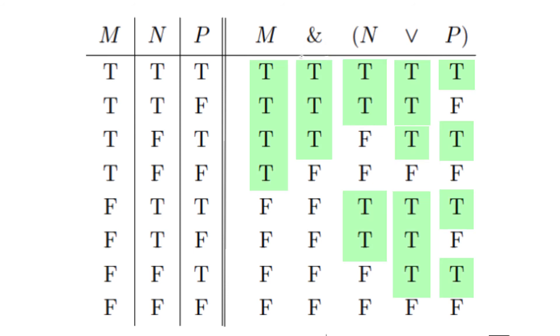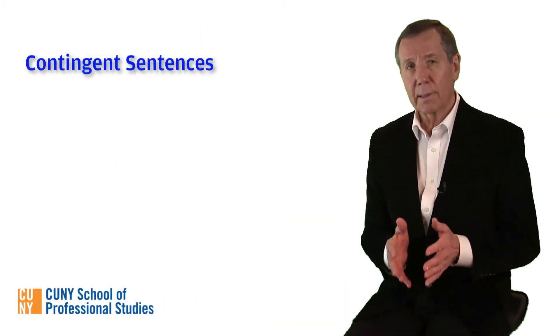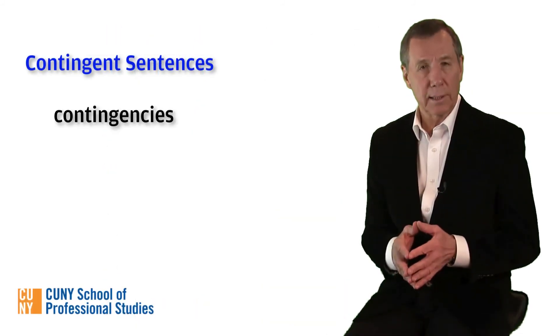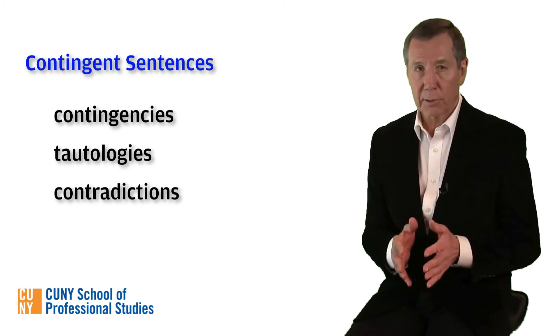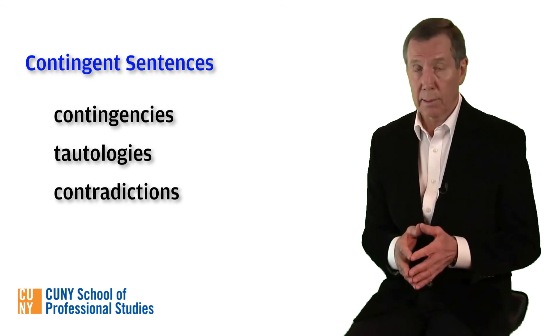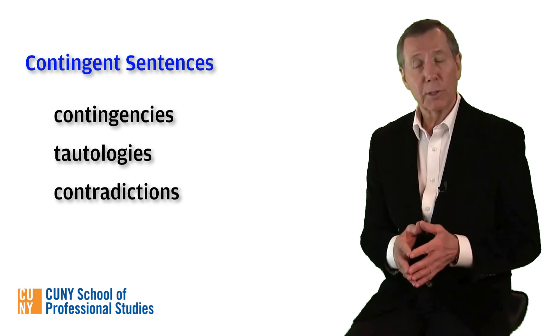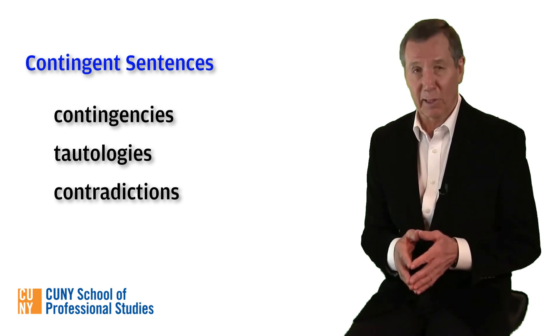As you can see, the sentence is sometimes true and sometimes false. That's our definition of a contingency. These three types of sentences — contingencies, tautologies, and contradictions — are exhaustive. Any truth-functional compound sentence must belong to one and only one of these categories. Next up, we'll see how a truth table can be used to determine logical equivalence.